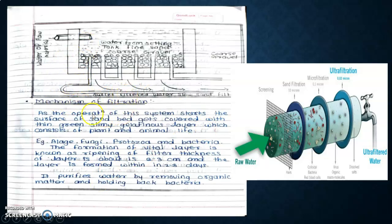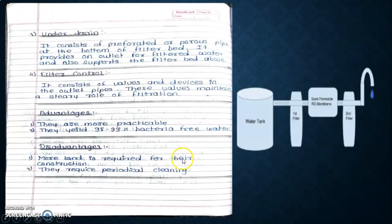Mechanism of filtration: as the operation of this system starts, the surface of sand bed gets covered with green, slimy, gelatinous layer which consists of plant and animal life. Examples include algae, fungi, protozoa, and bacteria. This formation of vital layer is known as ripening of filter. The thickness of layer is about 2 to 3 cm and the layer is formed within 2 to 3 days. It purifies water by removing organic matter and holding back the bacterial spores.